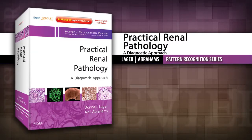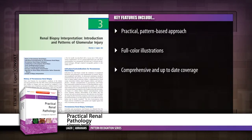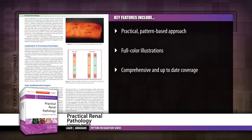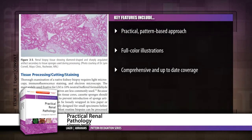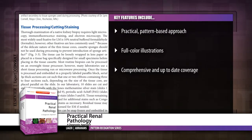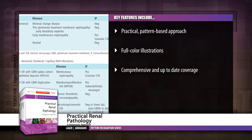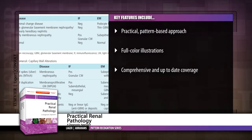Introducing Practical Renal Pathology, a Diagnostic Approach. This book helps you apply a systematic pattern recognition approach to achieve more accurate diagnoses of both neoplastic and non-neoplastic diseases of the kidneys. This volume in the pattern recognition series helps you to efficiently and confidently evaluate even the most challenging histologic specimens.